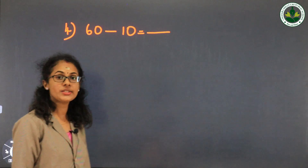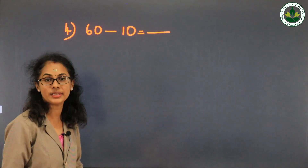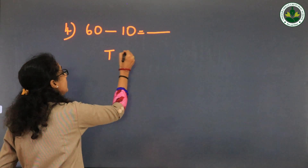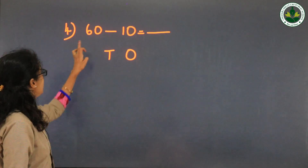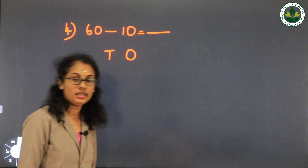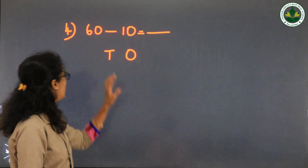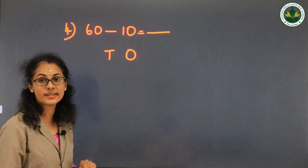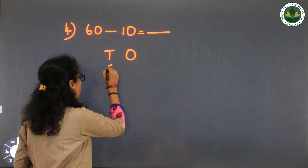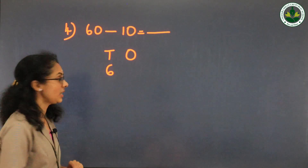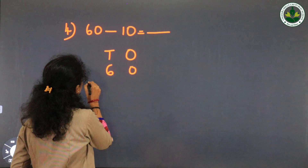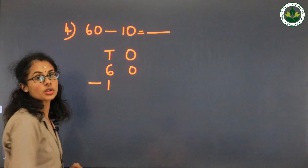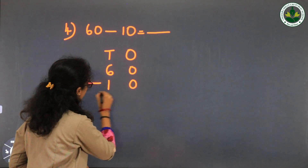60 minus 10 equals dash. In 60, there are 6 tens and 0 ones. Write 6 in the tens column and 0 in the ones column. Then 10: write 1 in the tens column and 0 in the ones column.